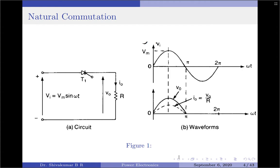In practice, the thyristor is triggered synchronously with the zero crossing of the positive input voltage in every cycle in order to provide a continuous control of power. This type of commutation is applied in AC voltage controllers, phase controlled rectifiers, and cyclo converters.